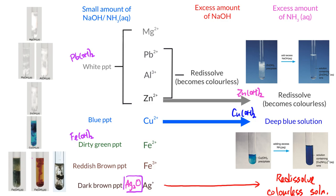To summarize: in small amount, remember the color of the precipitate. In excess sodium hydroxide, only three re-dissolve. In excess ammonia, two ions behave specially — zinc re-dissolves to a colorless solution, and copper(II) becomes a deep blue solution. Using this concept, you can identify what kind of metal ions are present in a solution. An important point: zinc hydroxide re-dissolves in both excess sodium hydroxide and excess ammonia — this is quite special, bear it in mind.